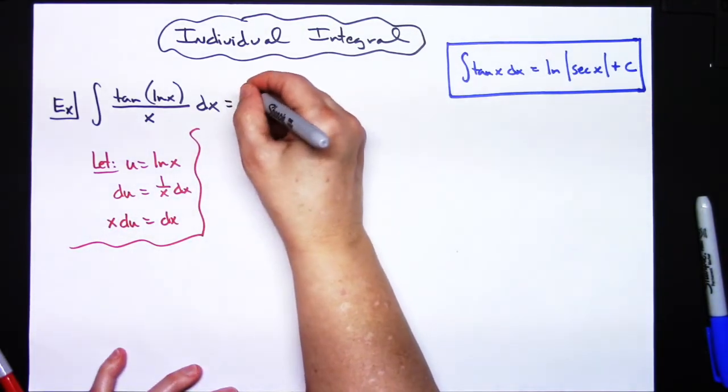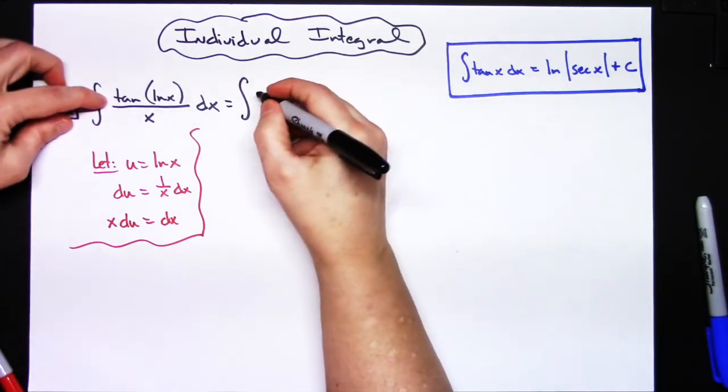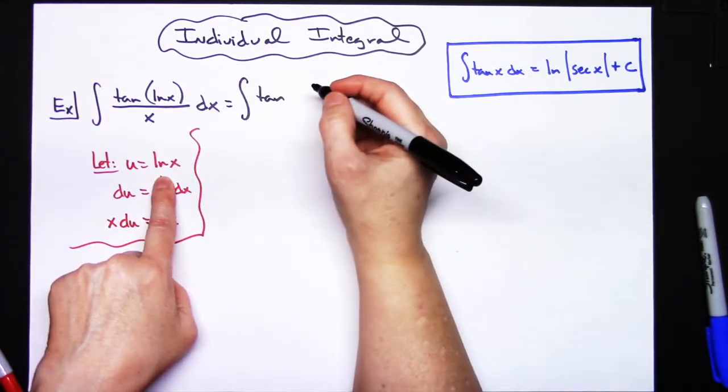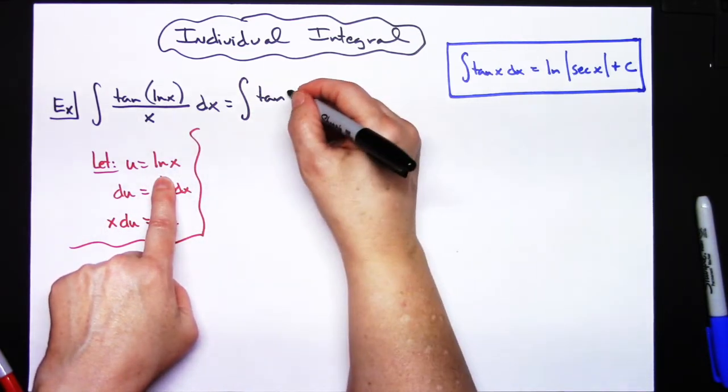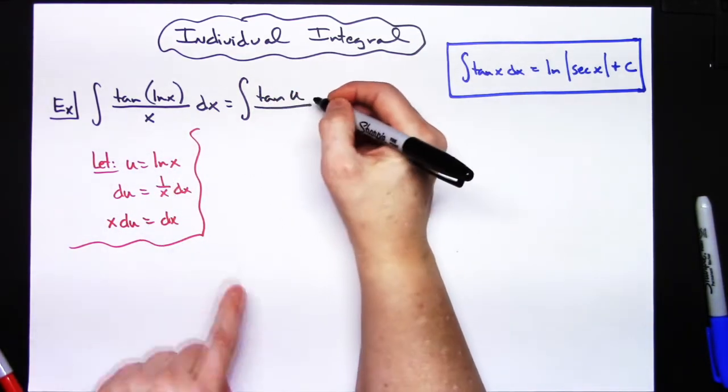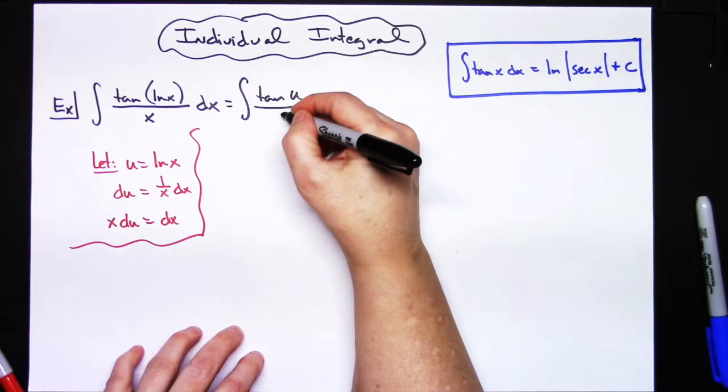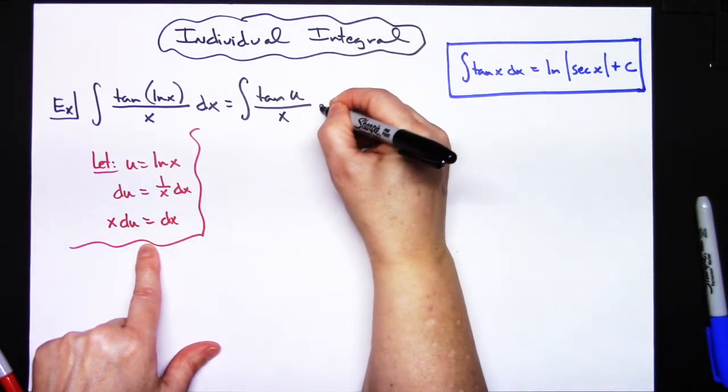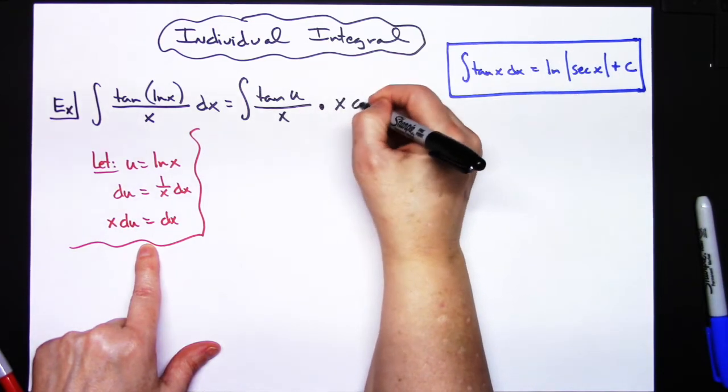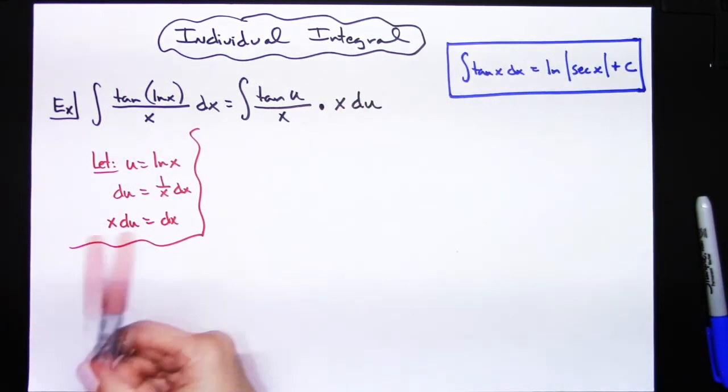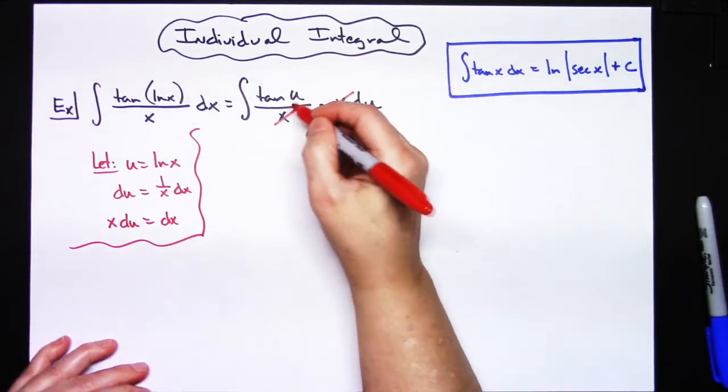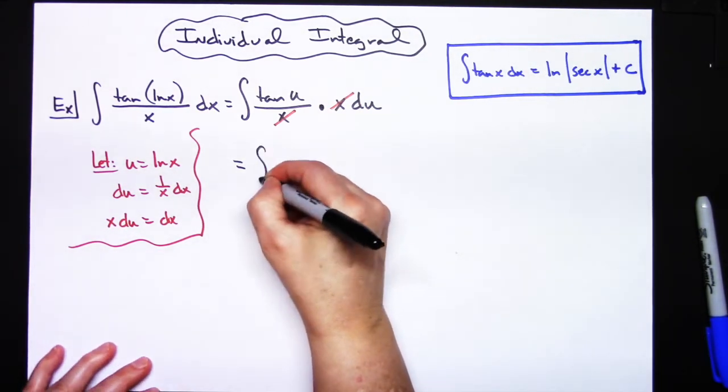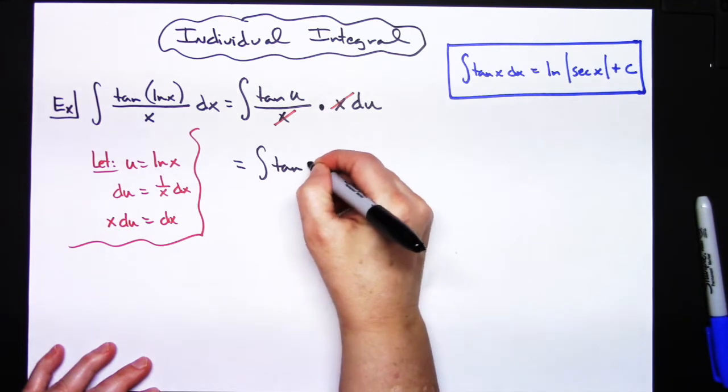Okay, now at this point I'm going to come back up here and I'm going to do some substitutions. So I'll still have my tangent. I let u be the natural log of x there, so I'm going to have a tangent u all over the x which is going to stay. dx then is going to be replaced with what I said it was going to be equal to, which is x du. Now that's going to let those two x's cross out, and I'm going to be then down to the integral of tangent u du.